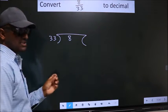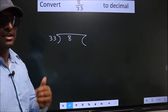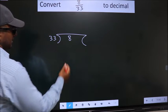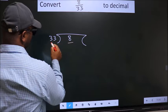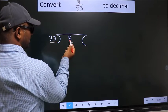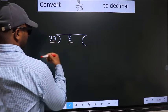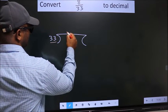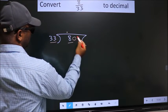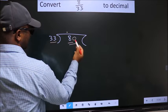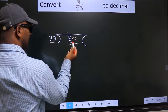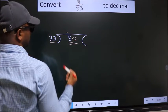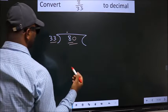This is step 1. Next, here we have 8, here 33. 8 is smaller than 33. So what we do is put a dot here and take 0 here. So, 80. A number close to 80 in the 33 table is - we go with 2.